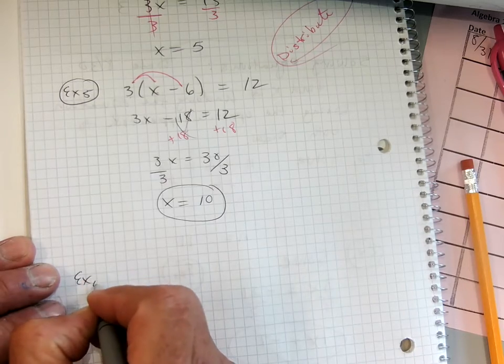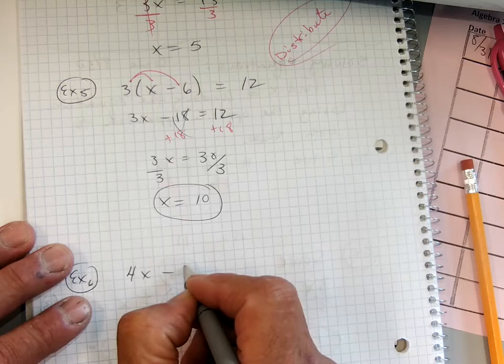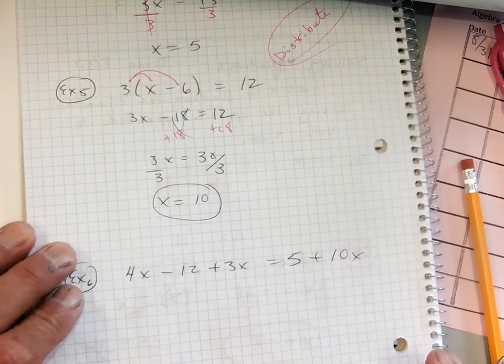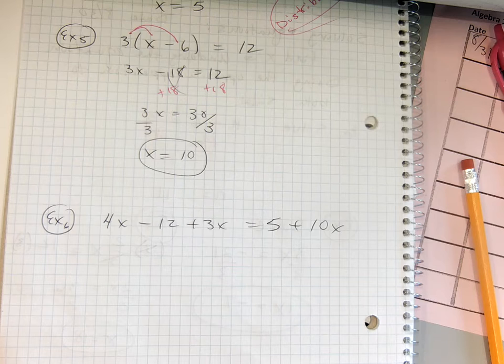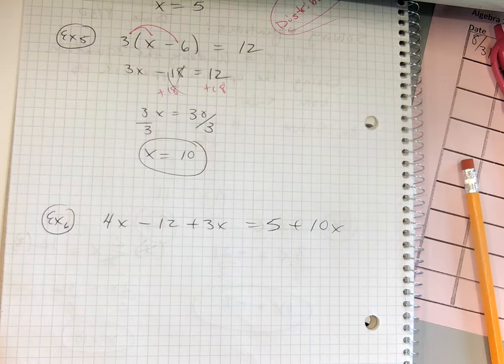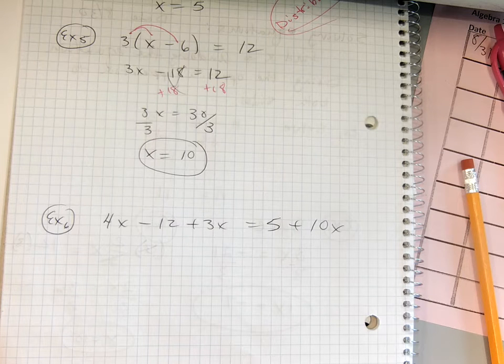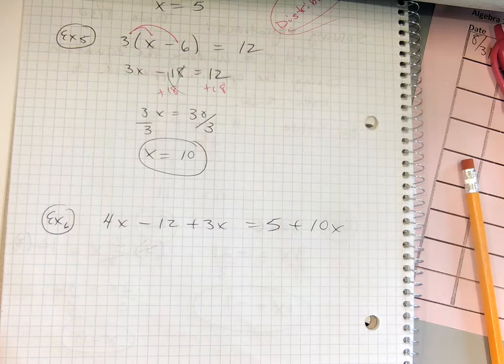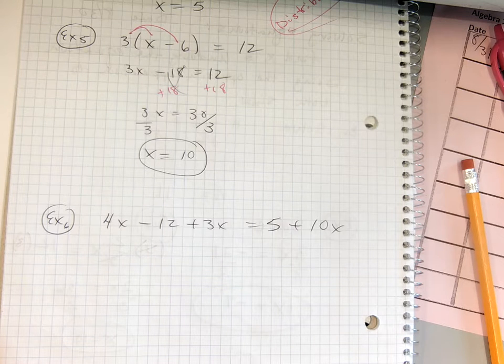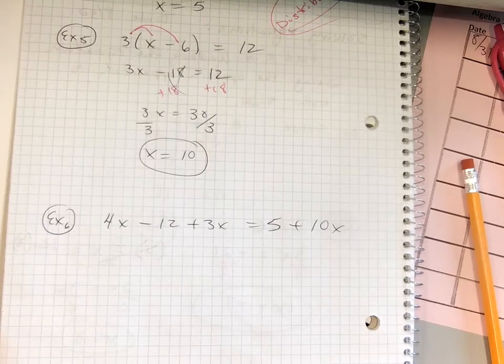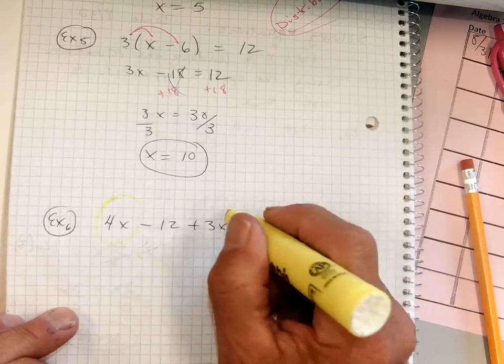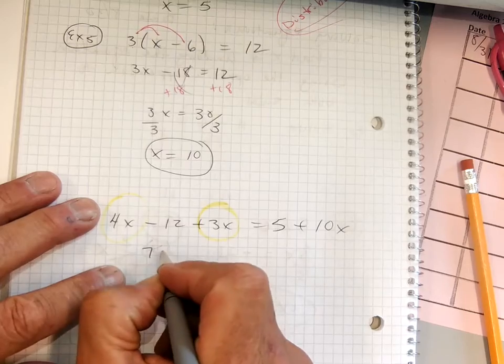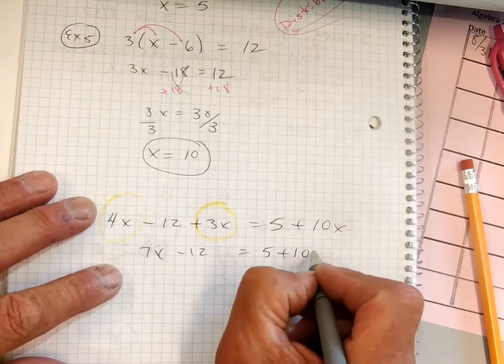I got an example six. I'm getting there. 4x minus 12 plus 3x equals 5 plus 10x. How about that one? Too many x's. What should we do? Combine them. Yeah, let's combine them. Because I've got too many x's, and what I do see is I've got a 4x and a 3x. Just on this side, these can be combined, right? These two can be combined. 7x minus 12 equals 5 plus 10x. Okay, now before I move on,